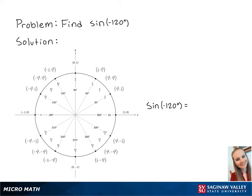For this problem we're going to find sine of negative 120 degrees. Since this number is negative, we're going to start at 0 and rotate backward 120 degrees. Sine correlates to the y-coordinate on the unit circle. So sine of negative 120 degrees is equal to negative square root of 3 over 2. And this is the final answer.